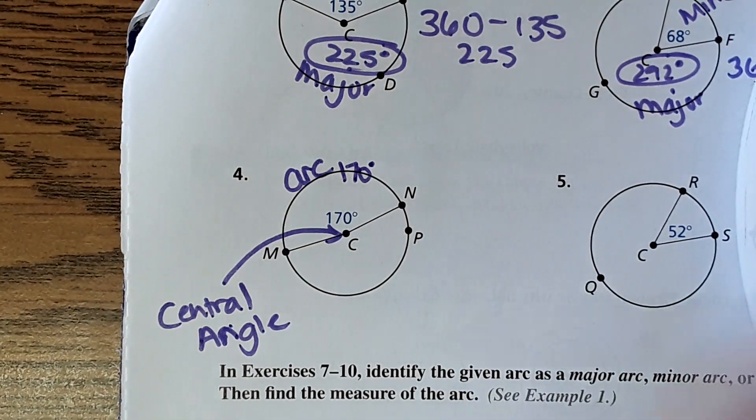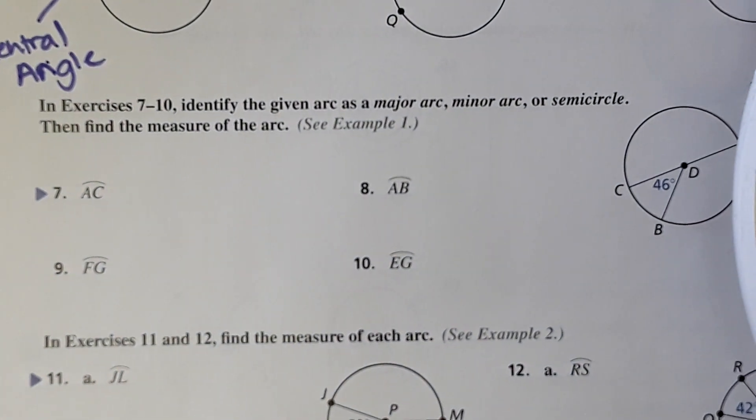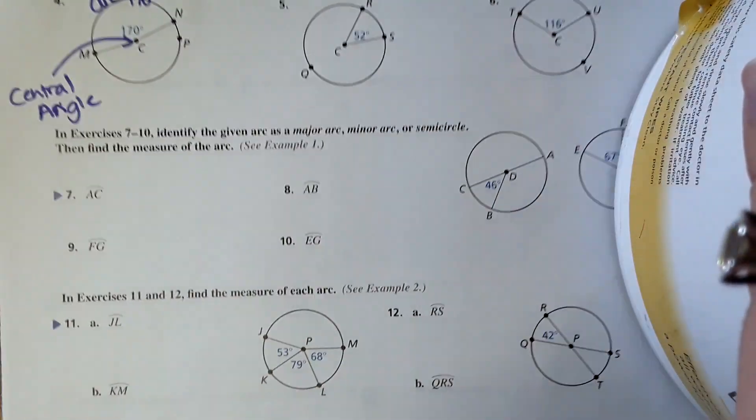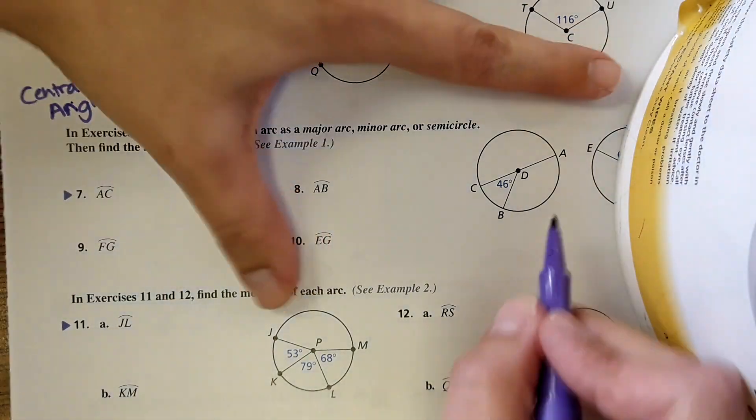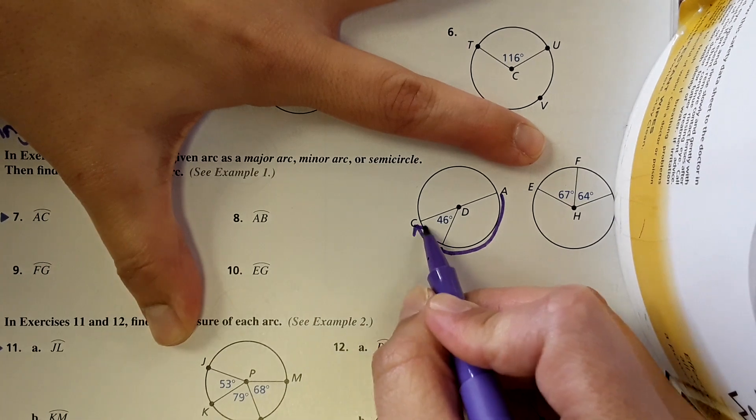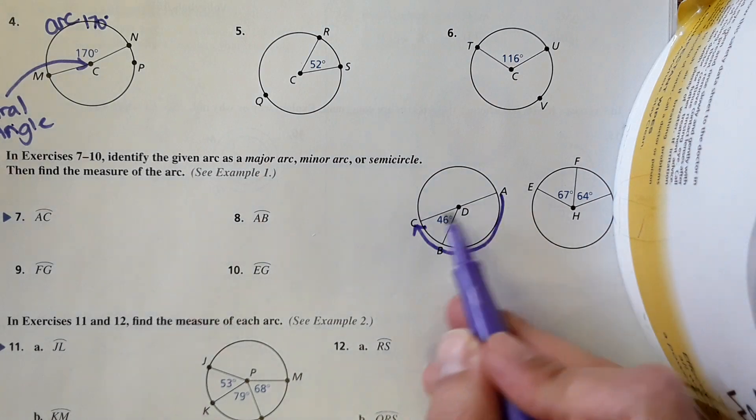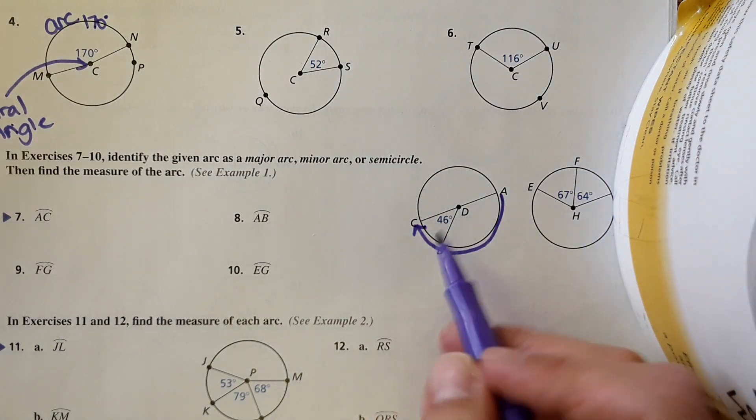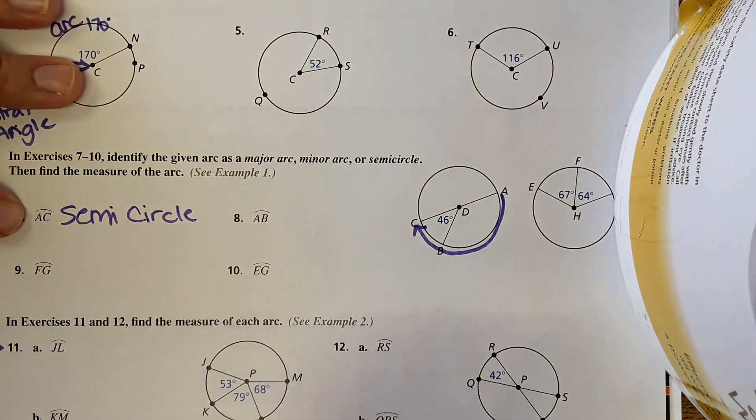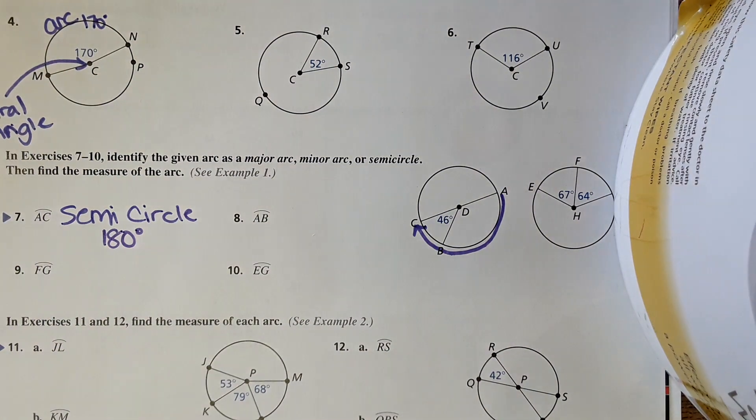Next, now we're going to apply it to some examples. It says identify the given arc as major, minor, or semicircle, then find the measure of the arc. Arc AC, so AC right here, let's see from A to C. Notice how it's exactly halfway around, this is a diameter here, so therefore this is a semicircle, and the degree measure of it would be 180 degrees because halfway around the circle.